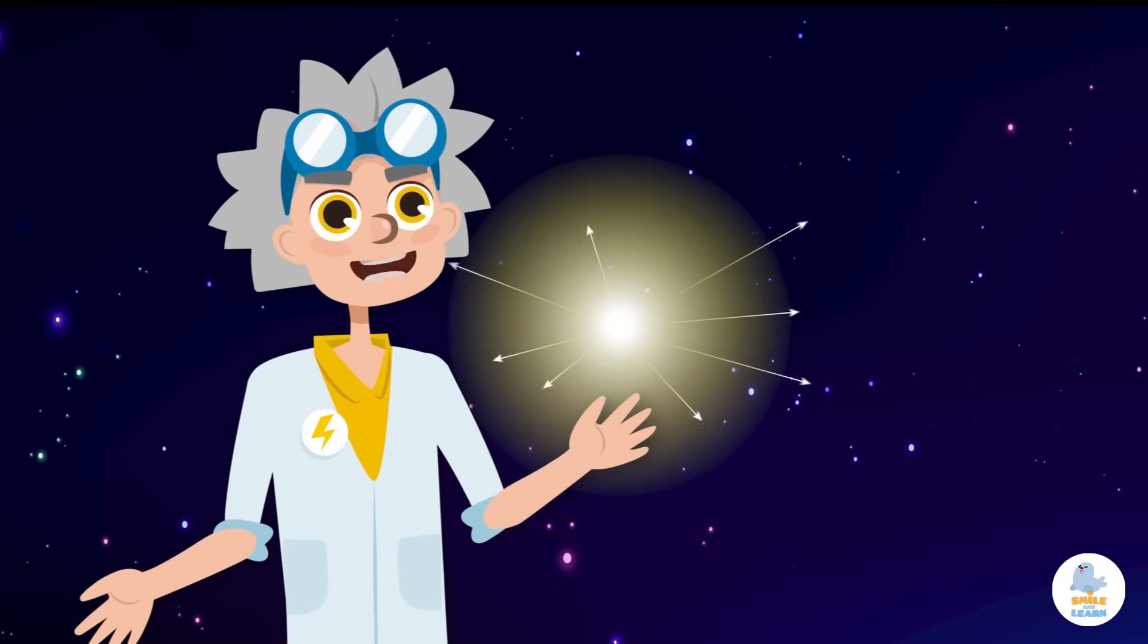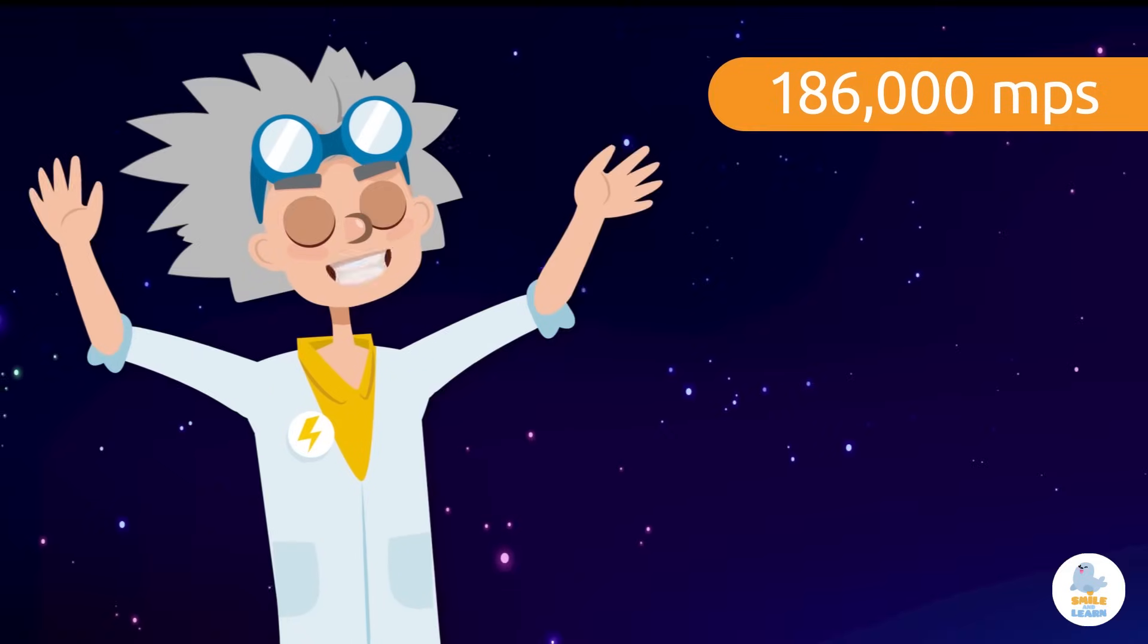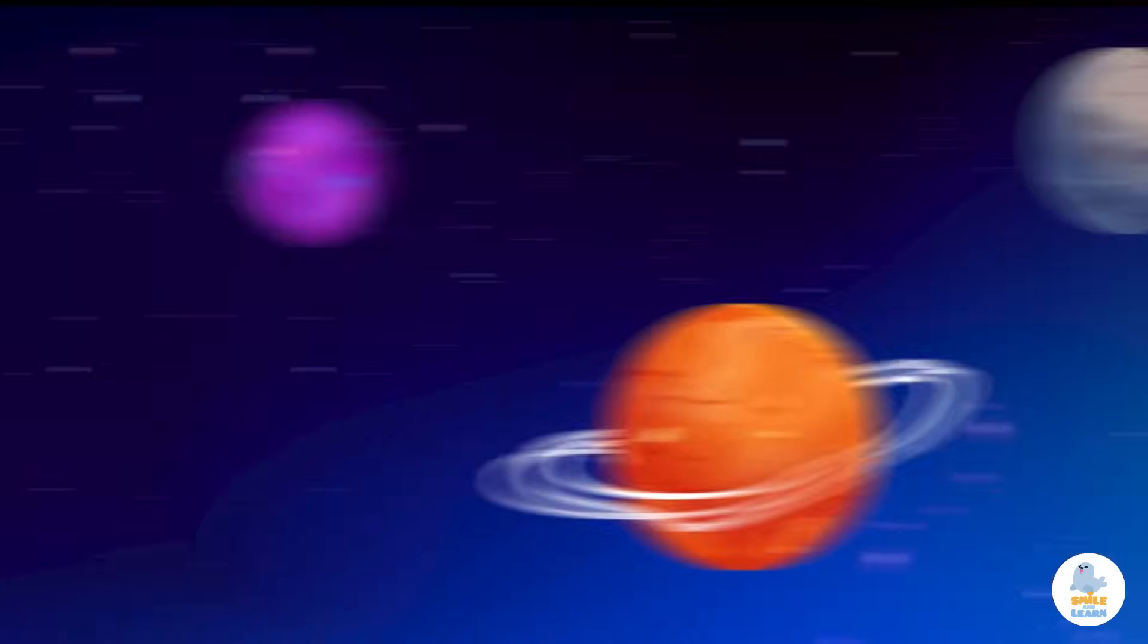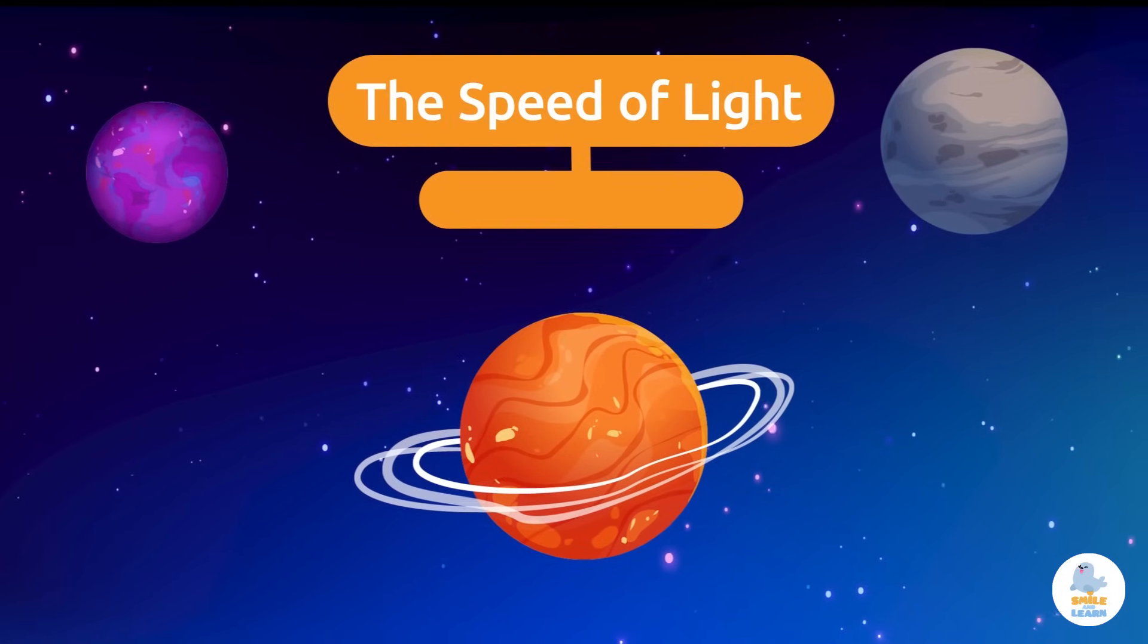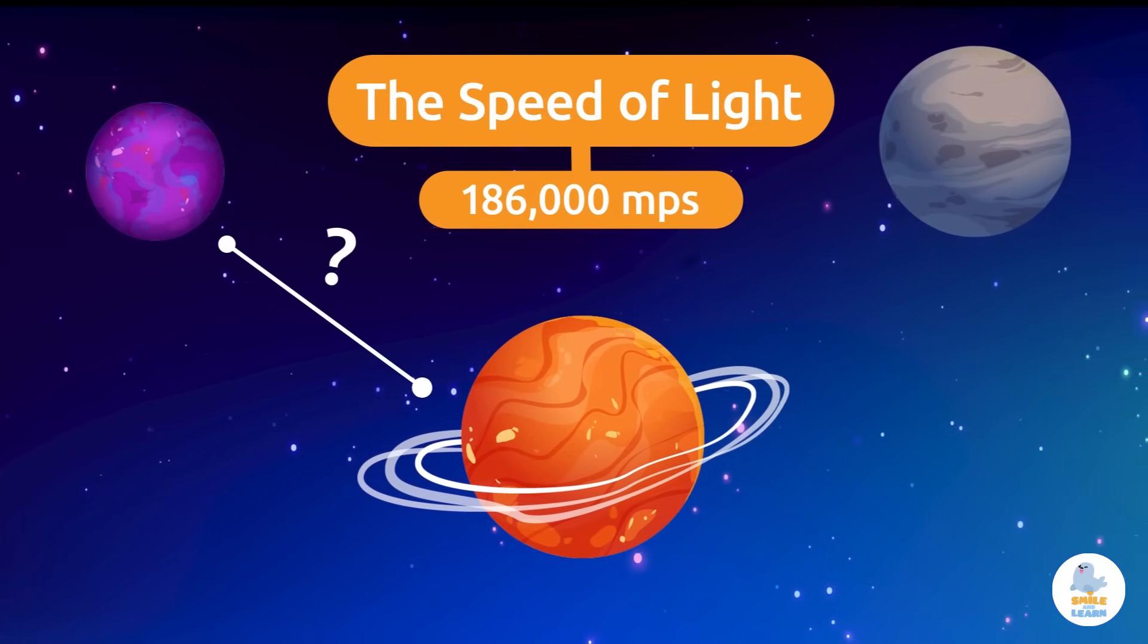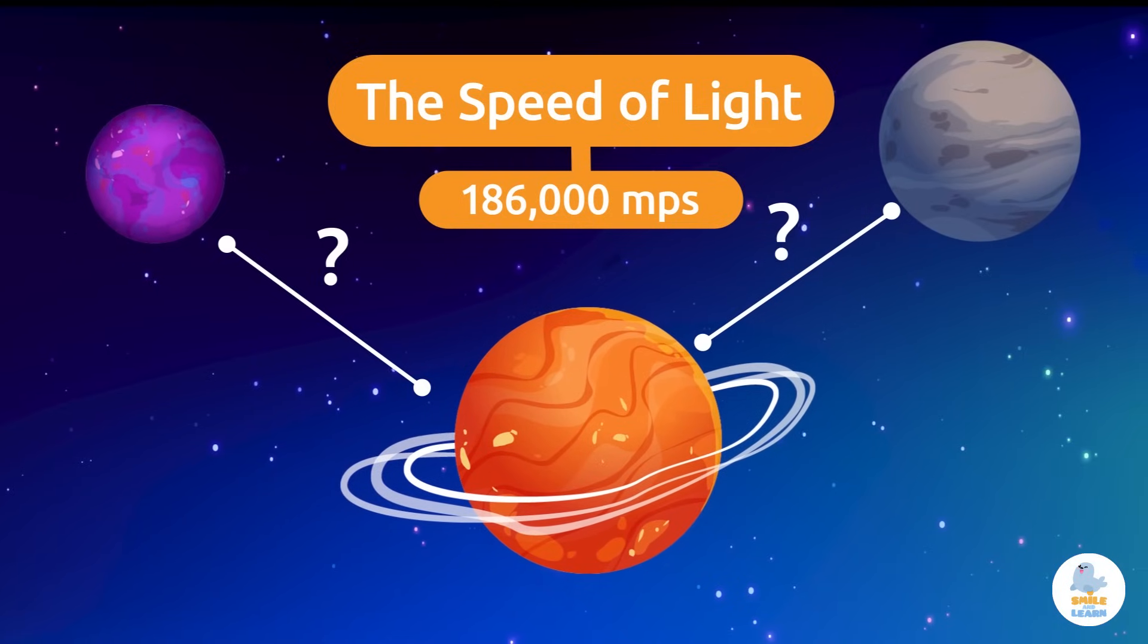Did you know that light travels in a straight line and in many directions at 186,000 miles per second? This is known as the speed of light and it is a unit of measurement to calculate the distance between two very distant points such as the distance between planets.